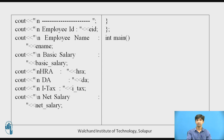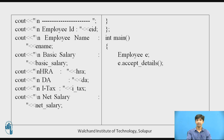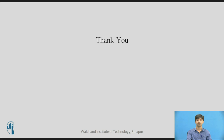Then the main function, from where actual execution starts. I create an object: employee e. Calling e.accept_details will take the employee ID, name, and basic salary and insert all data into the respective variables. Calling e.display_details will calculate the values and display the payslip on the screen. Then return 0. These are the following references. Thank you.